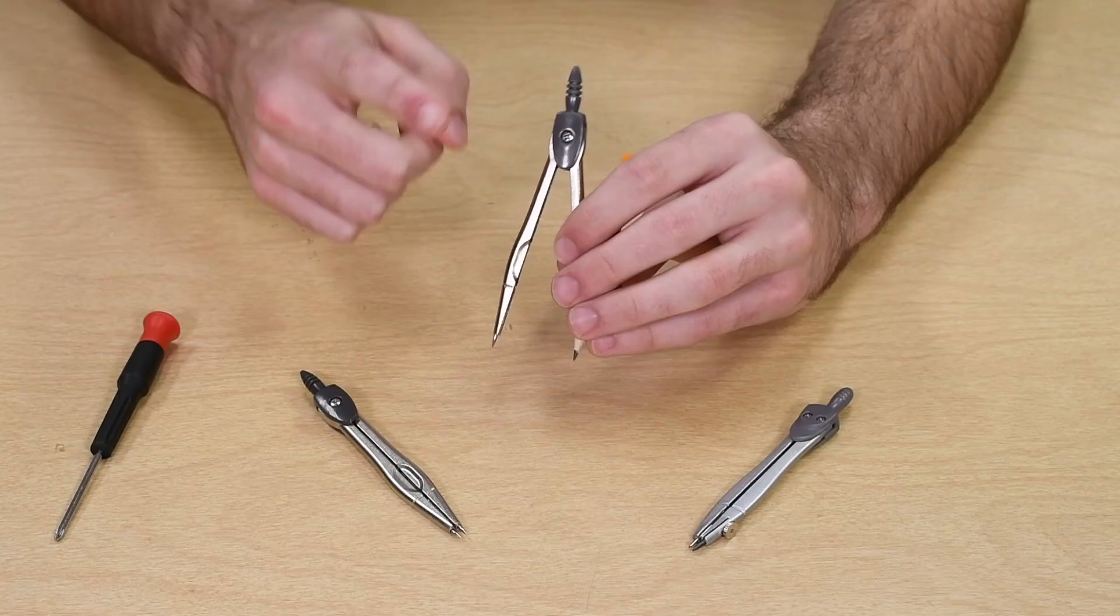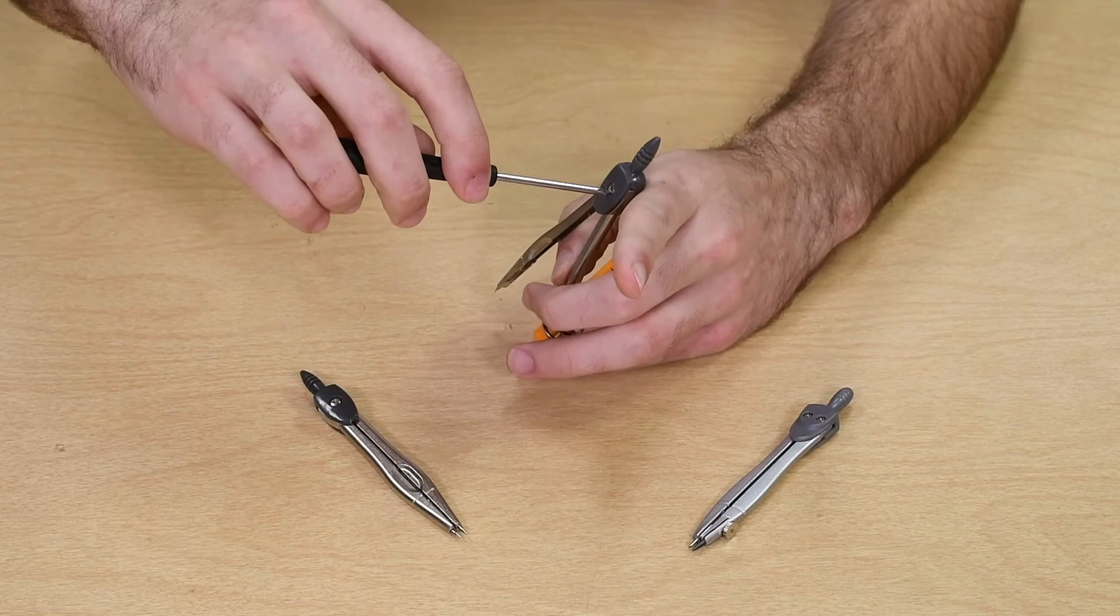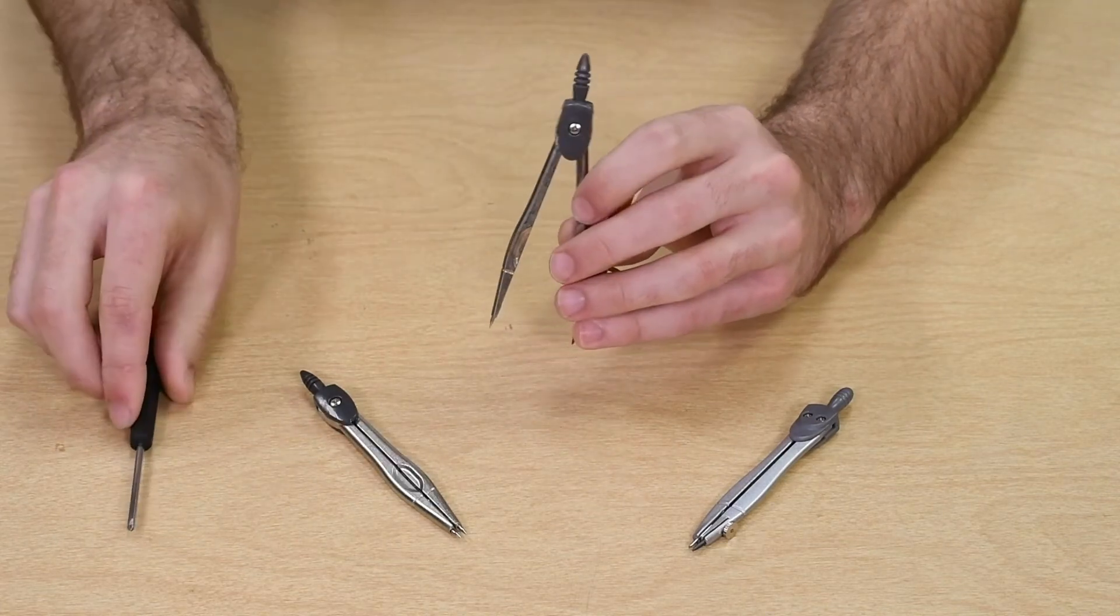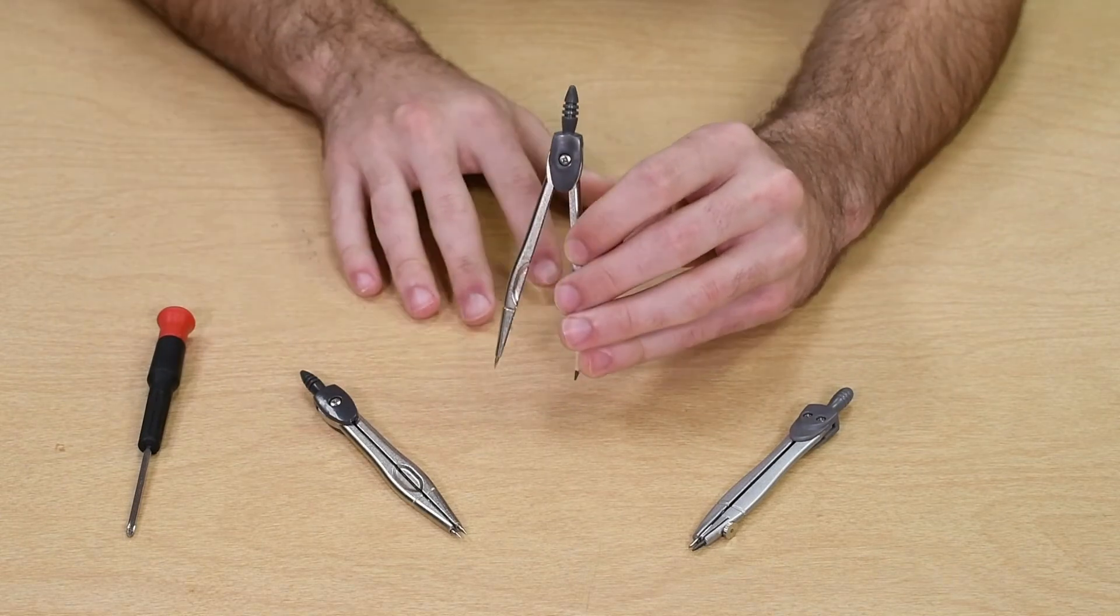A quick tip for using these compasses is that they have some screws on the top. You can easily adjust these screws to set how hard you want these legs to move. The tighter the screw, the harder to move the legs and more stable the compass is when drawing a circle.